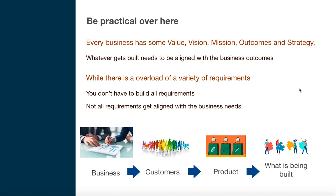Every business has some value, vision, mission, outcomes, and strategy. Whatever gets built needs to be aligned first with the business outcomes. Whatever product gets rolled out needs to be aligned with the outcomes of the business. Not all requirements can or need to be built, because not every feature aligns with the business needs — some might be totally out of scope.